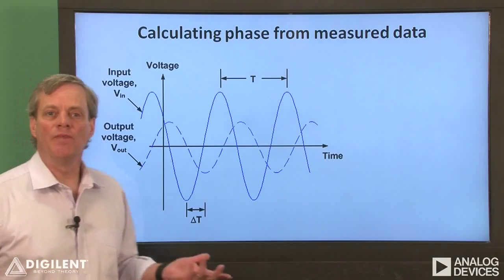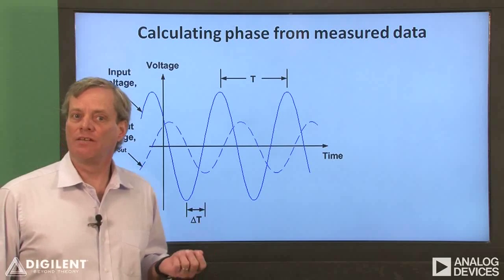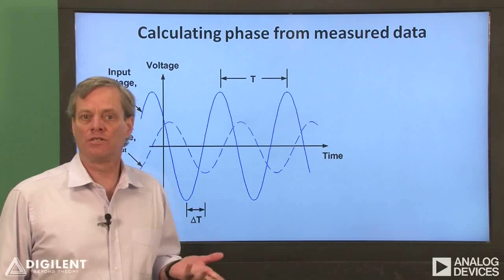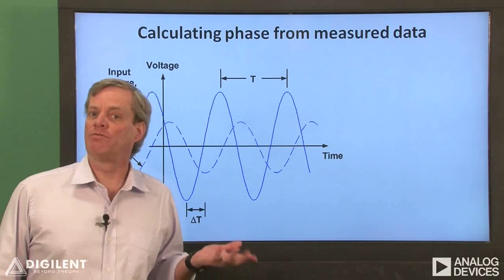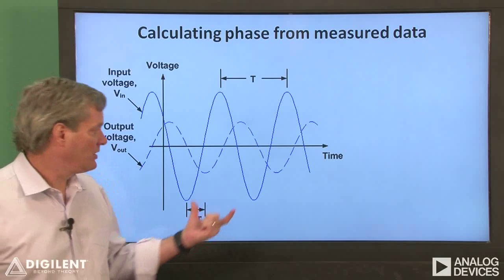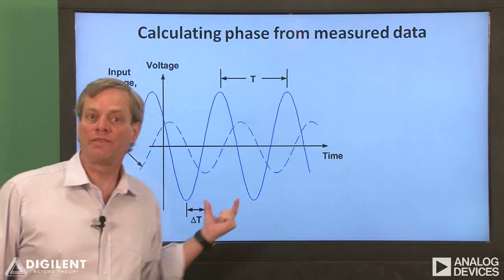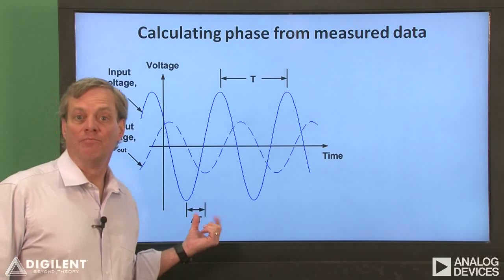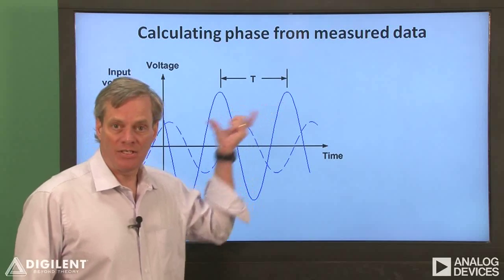Now let's take a look at using measured response data to determine the phase difference between two signals. It's important to notice that when determining the phase difference between two signals from measured data, the individual phases of the two signals are not important. This is contrary to the approach that we usually use to determine the phase difference mathematically. To determine the phase difference between two signals, we just need to measure the time delay between the two signals. This time delay is just the time between two points with the same phase on our signals. For this example, we've just chosen two points where the signals are at their minimum values.